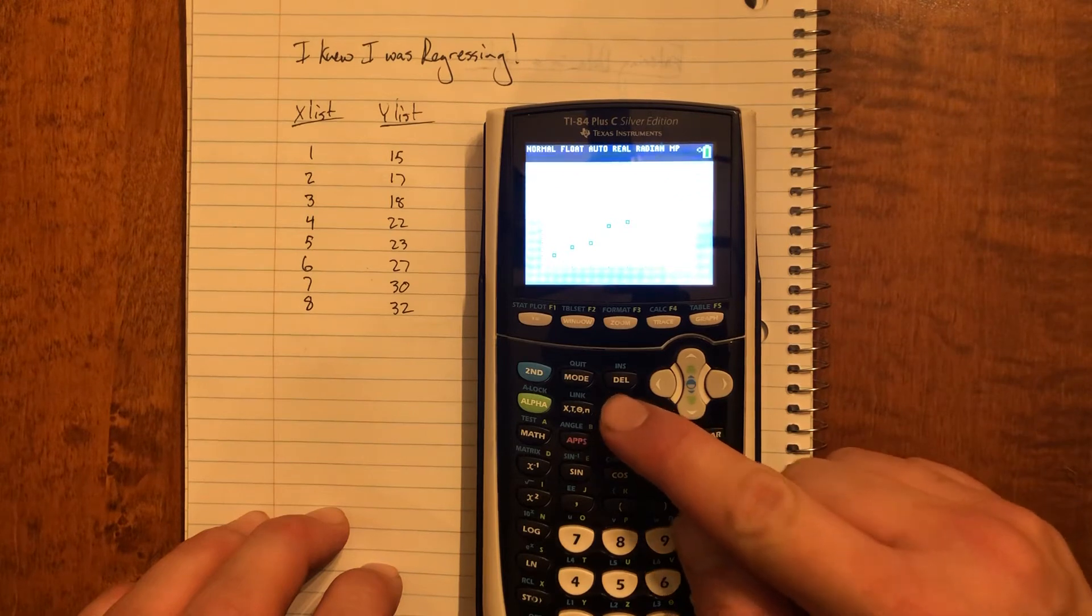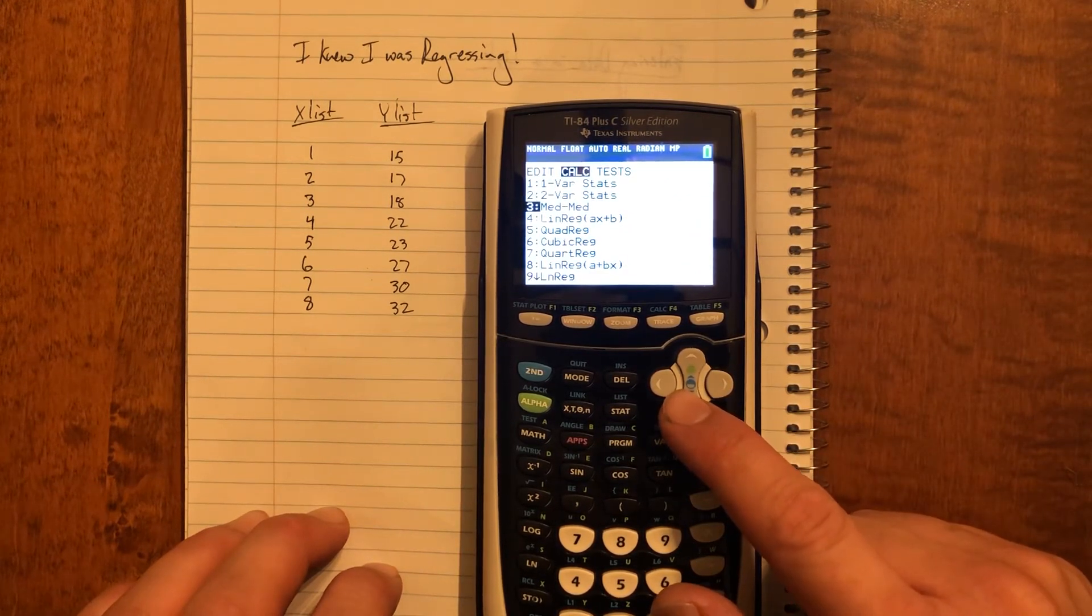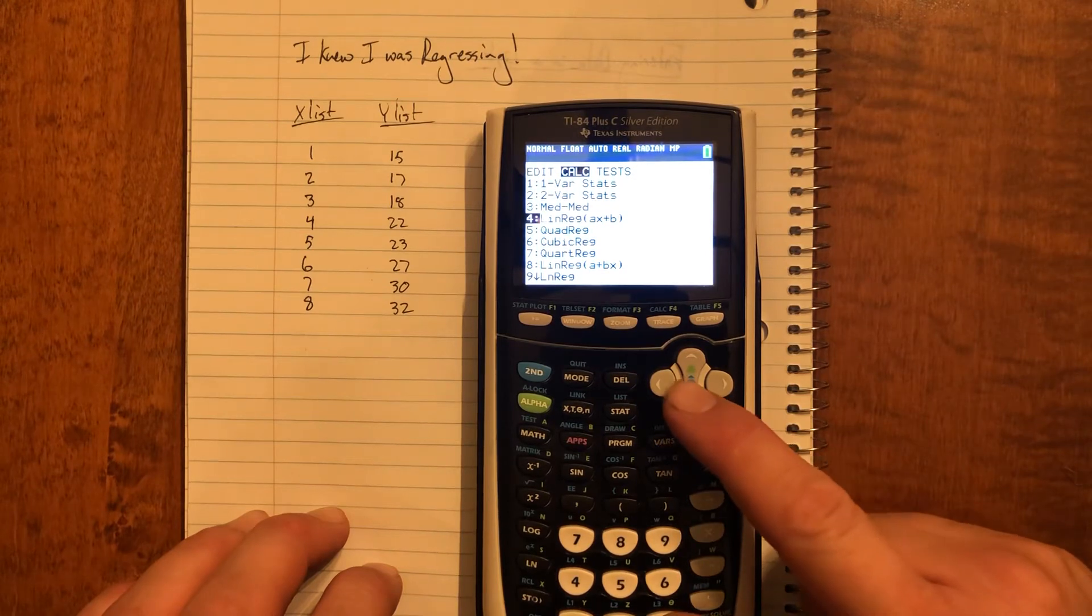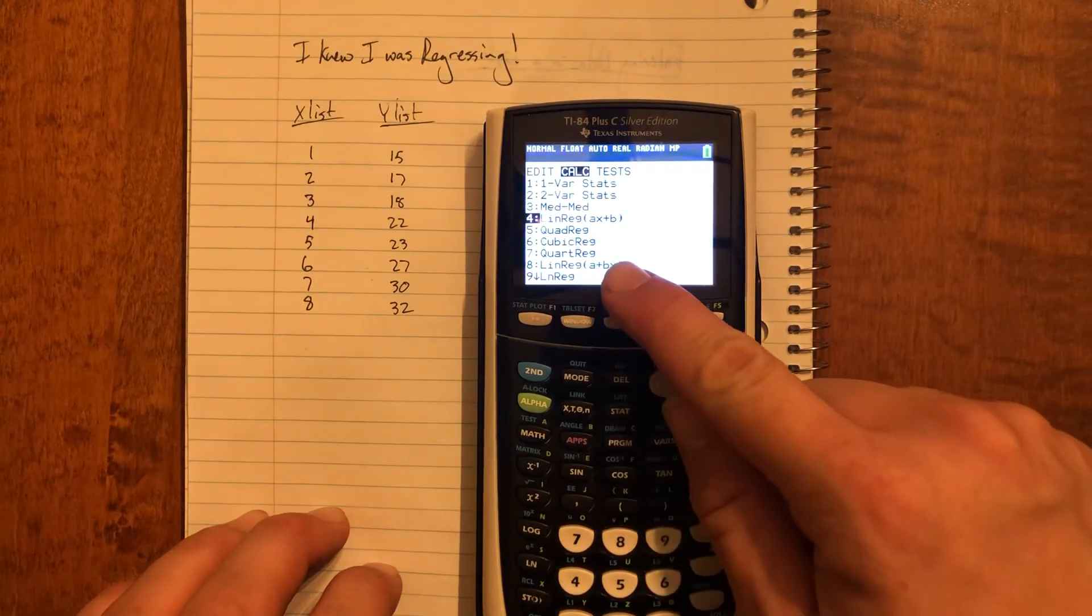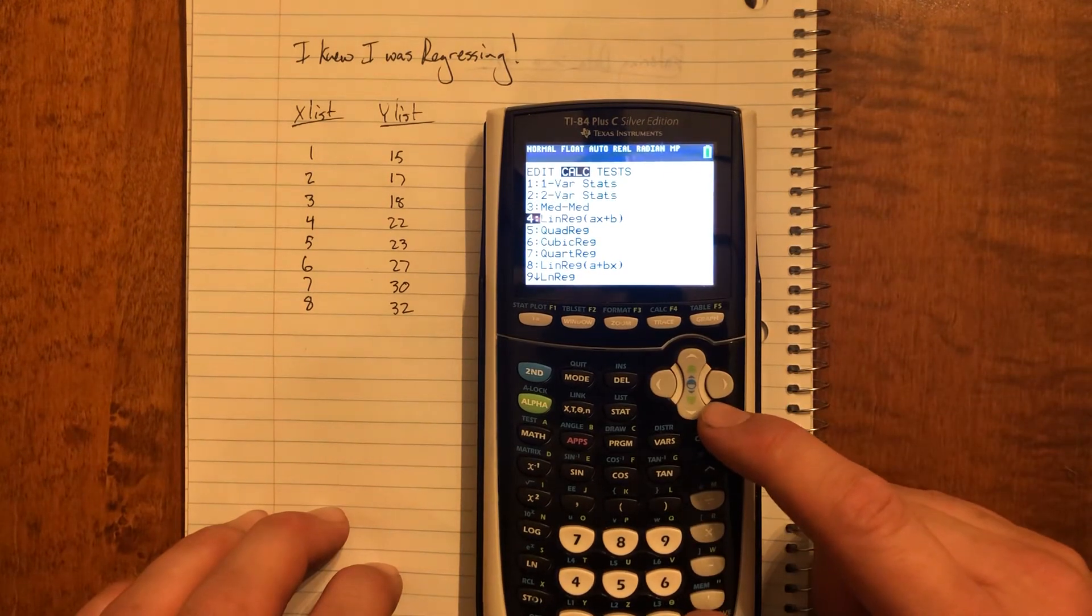The way I'll find that is I'll go stat, over to calc, and I'll scroll down to linear regression. Now there's two linear regressions: a plus bx and ax plus b. I always pick the first one.